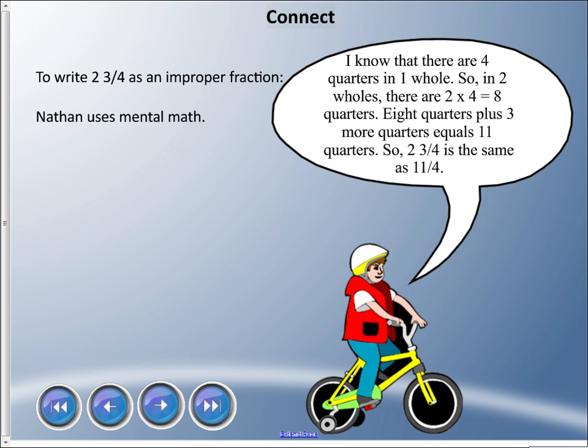Or you could use mental math. Here I have Nathan the mental math wizard riding his training wheeled bike, and he is saying: 'I know that there are four quarters in one whole, so in two wholes there are two times four equals eight quarters.'